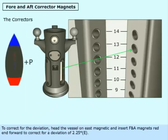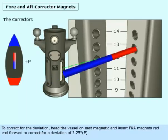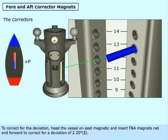To correct for the deviation, head the vessel on east magnetic and insert F and A magnets red end forward to correct for a deviation of 2.25 degrees east.